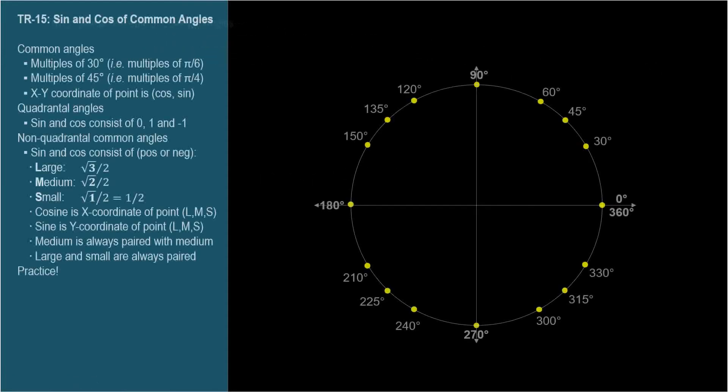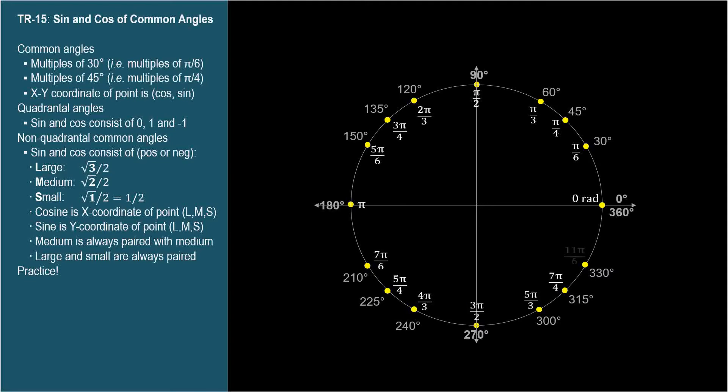Here are the common angles expressed in degrees from TR-04. You should know these. Here they are expressed in radians from TR-06. You should know these too. Now we're going to add to the diagram.